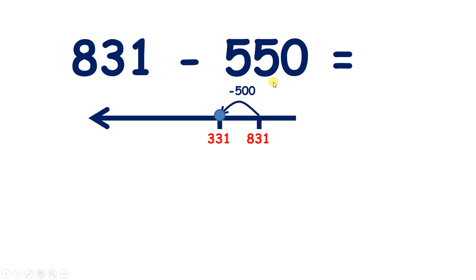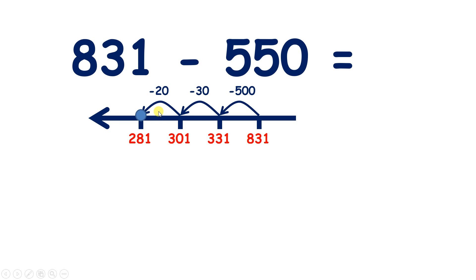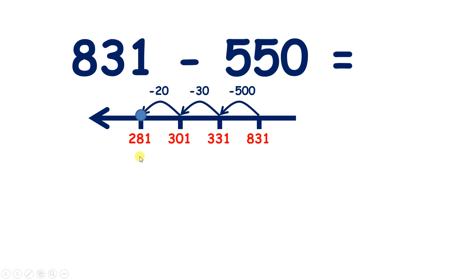Now we need to subtract five 10s. Rather than subtracting five 10s all in one go, let's subtract three 10s to give us 301. How many more 10s do we need to subtract? We need to subtract two more 10s, and that gives us 281. So we subtract 30, then 20, so we subtract 50 altogether, so 831 minus 550 equals 281.